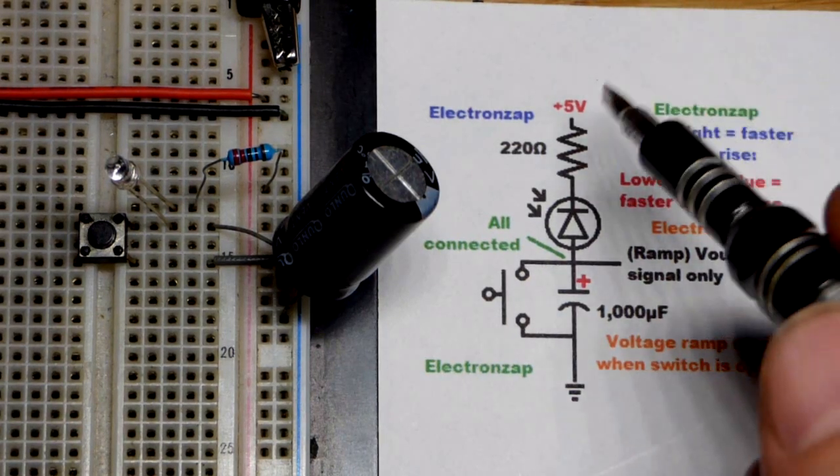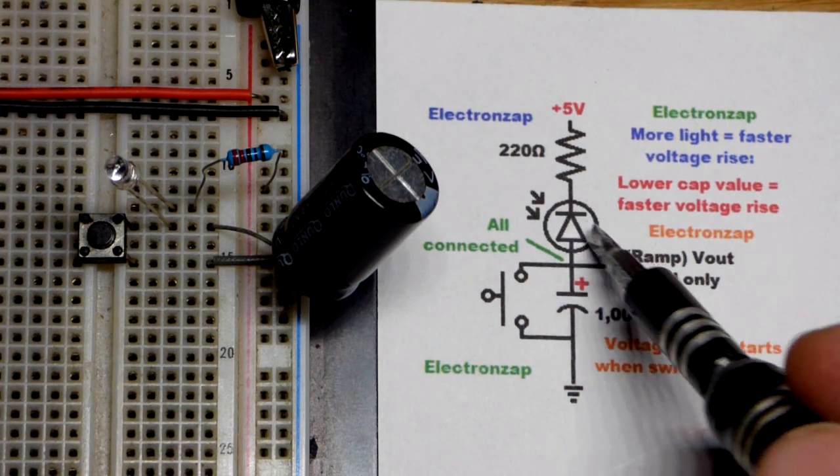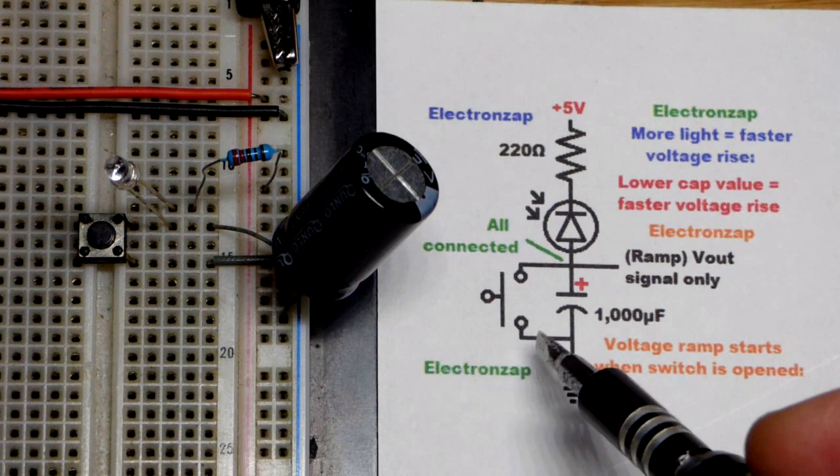And here is the circuit. So we have a 220 ohm resistor in series with the reverse biased photo diode there and a capacitor. That's when the switch is open.